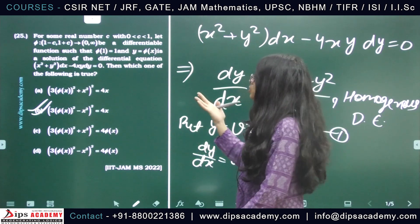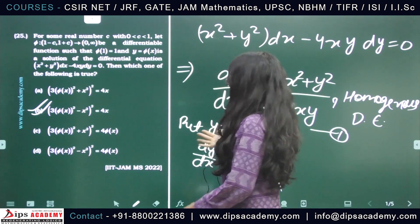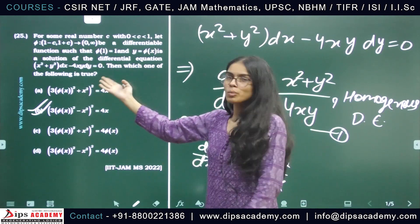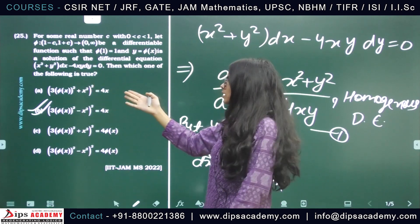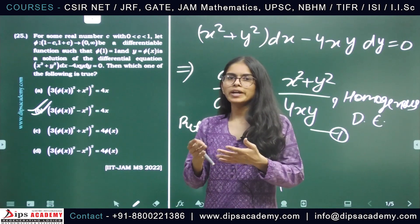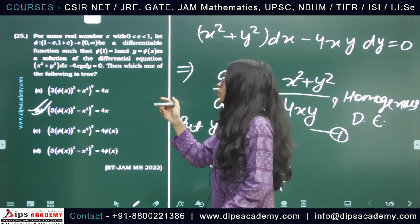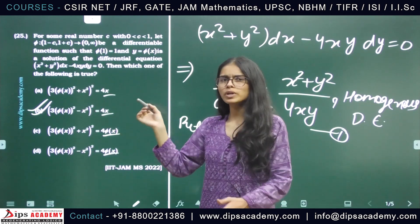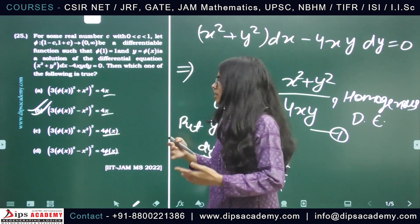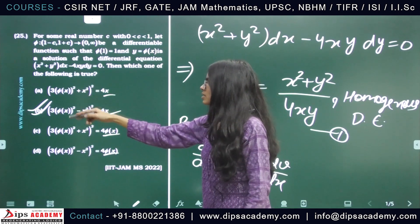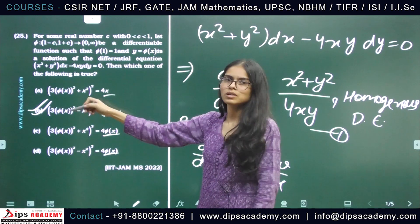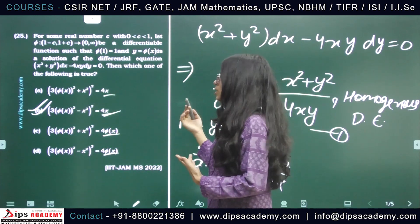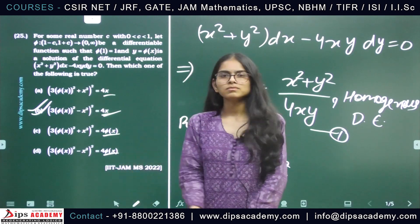This question wasn't that lengthy. Since it's a homogeneous differential equation, you apply the standard method. During the calculation, when finding the constant c, you get a factor of 4, and looking at the left-hand side in the options, you can identify option B directly. Option B is the correct answer. Thank you.